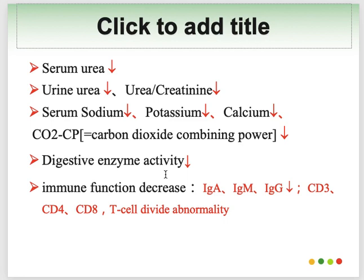It is not clear why some children with protein energy malnutrition develop kwashiorkor and others develop marasmus. Kwashiorkor is more common when infants are not weaned from the breast until about 12 months of age. Kwashiorkor basically develops after acute infections like measles or gastroenteritis.